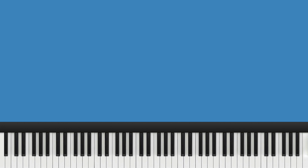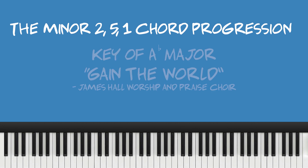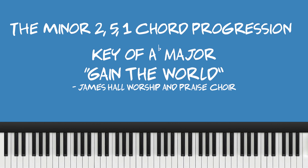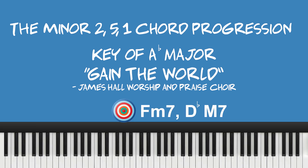What about minor chords? The thing about playing minor 2-5-1 chord progressions is that we use the same principle as targeting a major 2-5-1, but with a single exception. I'm going to use a popular gospel song from the 1990s called 'Gave the World,' sung by James Hall and Worship and Praise Choir. We still use the 2-5-1 chord progression, although we were in the key of A flat major. The two chord is a minor seven, five chord is a dominant seven, and the one chord is a major seven.